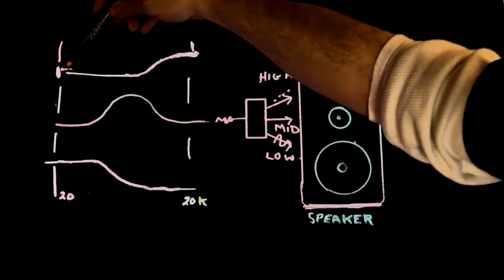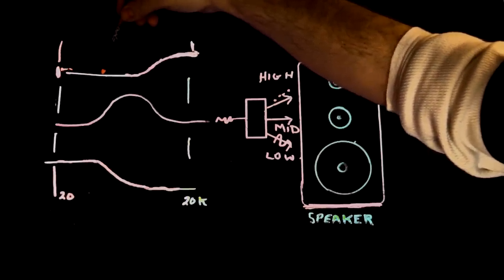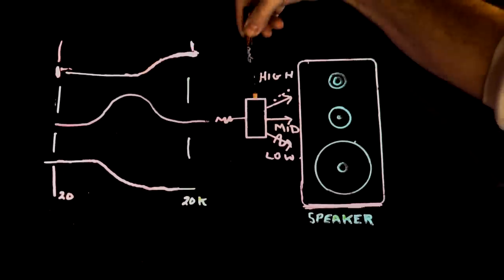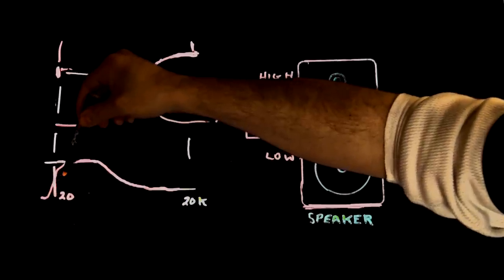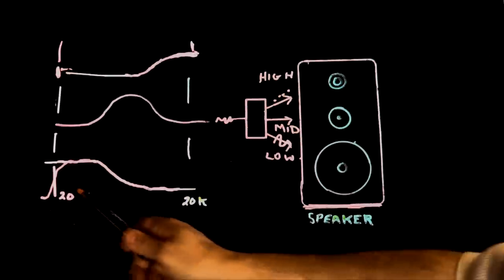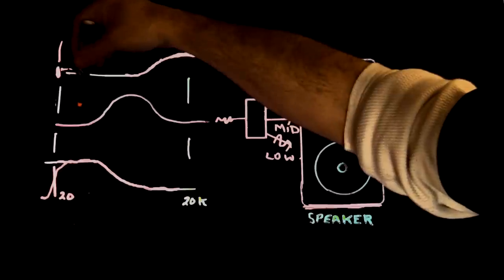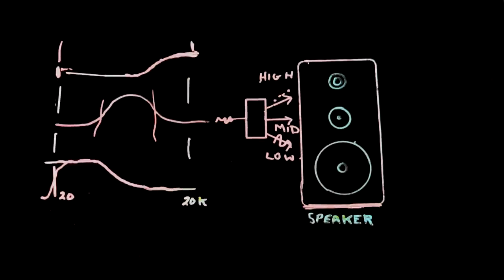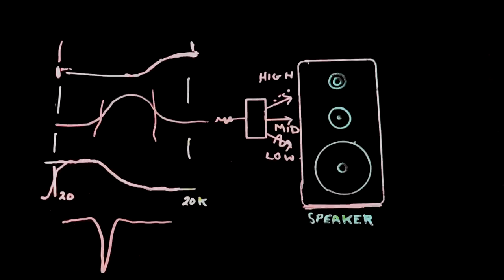Well, this is what it would look like on a graph. If this is low frequencies — 20 to 20K as they used to say — as frequencies come up, the high frequencies start to come through, and this is called a high pass. The low pass starts out passing low frequencies and then tapers off at the high range. We also have a band pass filter, where the lows don't get through, the highs don't get through, but the middles get through — there's a band that's allowed to pass. A band stop or band reject would look like the inverse of that.